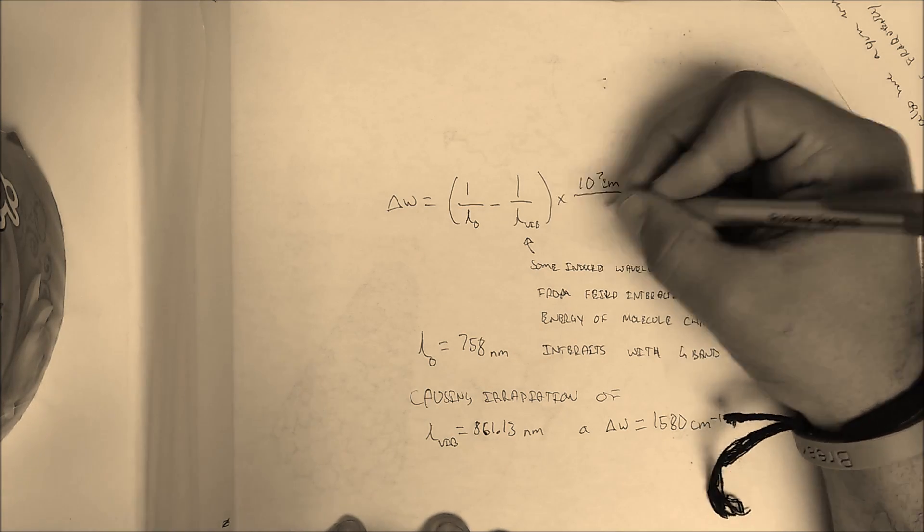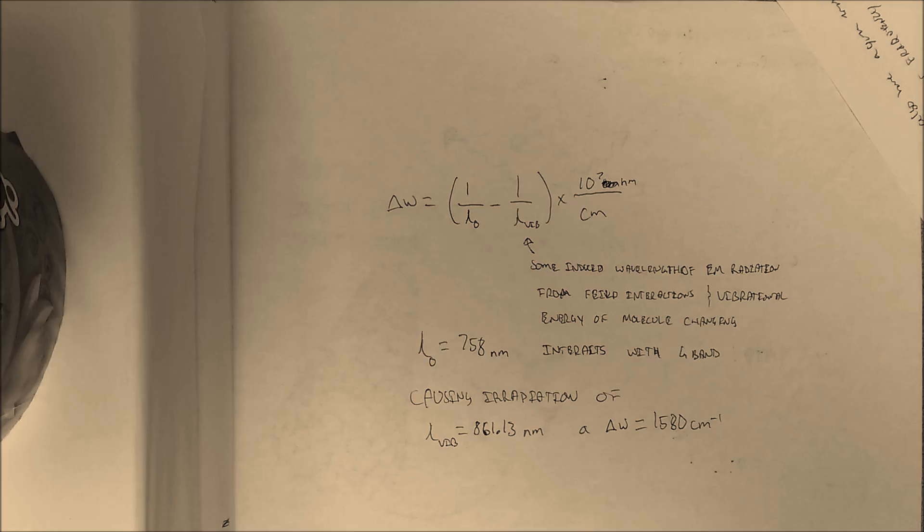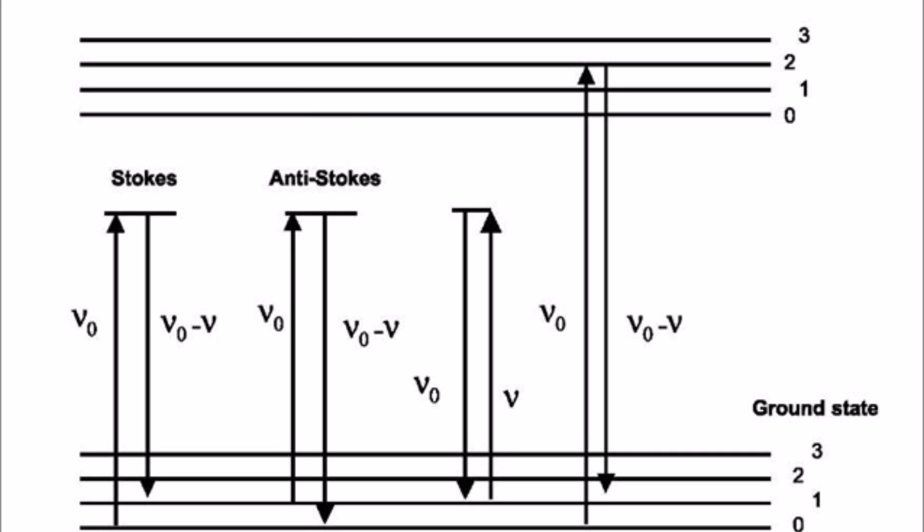So here we understand also the underlying difference between UV-vis and Raman spectroscopy. That is to say, that the incident photon energy in Raman spectroscopy is much lower than in UV-vis. And thus, the induced molecular energy is vibrational instead of electronic.